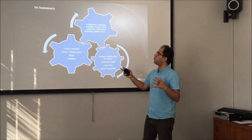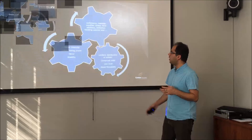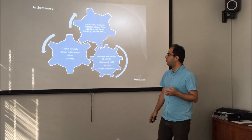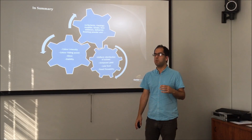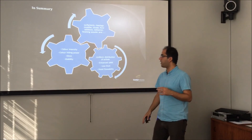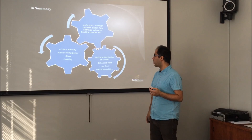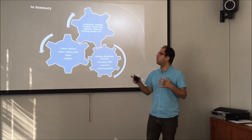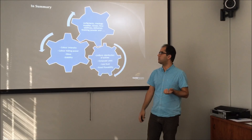In summary, for developing a seed coating formulation, careful attention must be paid to selecting surfactants, rheology modifiers, binders, flow additives, defoamers, finishing powder, and many other components. By carefully selecting these components and optimizing their levels in the formulation, it is possible to achieve very good color intensity, color hiding power, gloss, and stability of the polymer. This leads to uniform distribution of actives onto the seed, which enhances yield through improved germination, good flowability, and low dust. All of these aspects are connected from the first point of formulation to commercialization of the product.